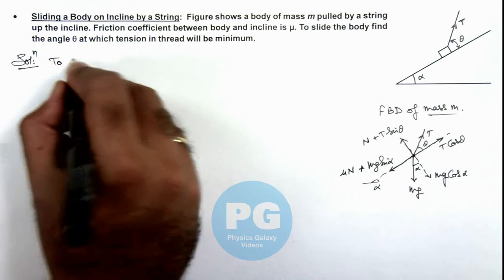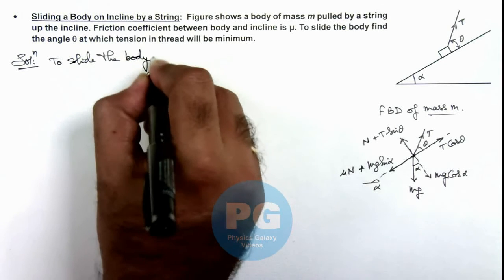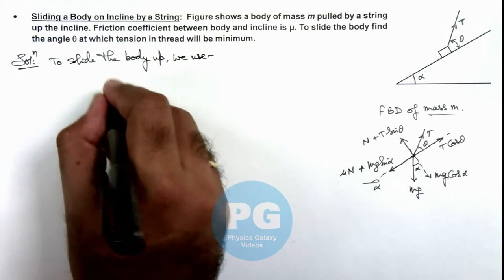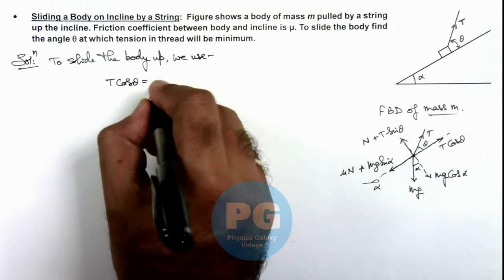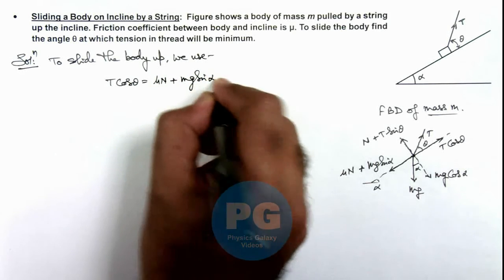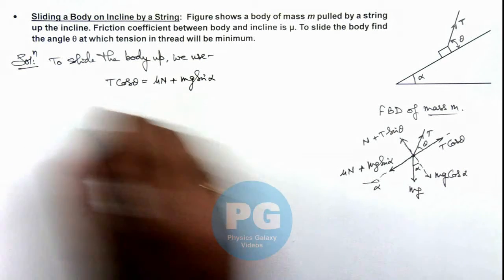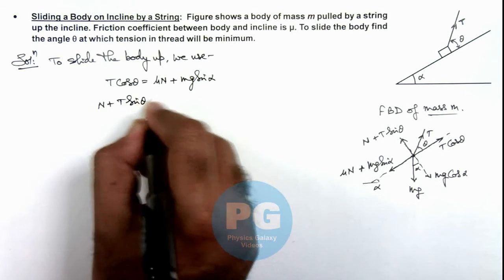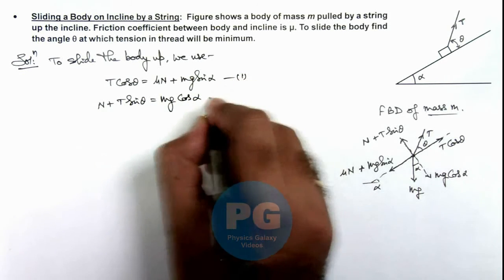So here we can write, to slide the body up, T cos θ should be equal to the forces acting in opposite direction which are μN plus mg sin α. And also in the direction perpendicular to incline, N plus T sin θ is equal to mg cos α. Say these are our equations 1 and 2.